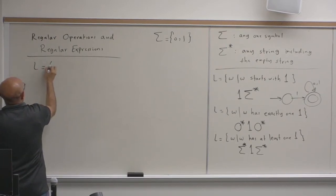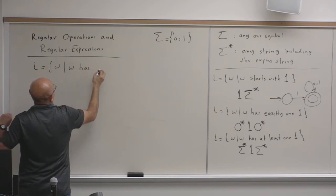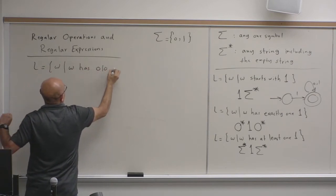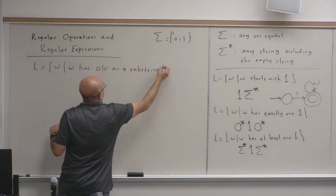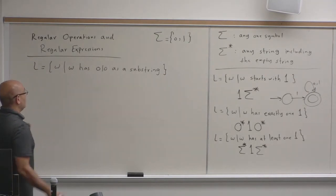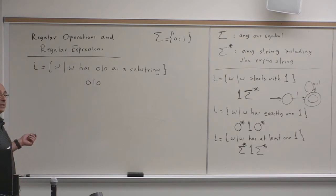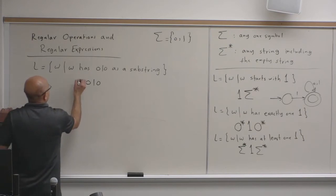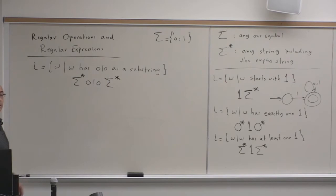Consider the language L of strings W such that W has '010' as a substring. We need '010' somewhere, with anything before and after it. So the regular expression is: sigma-star, 0, 1, 0, sigma-star.